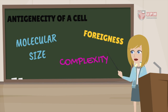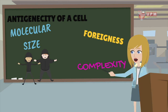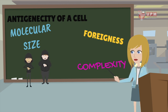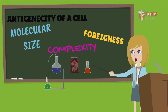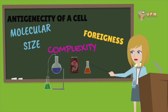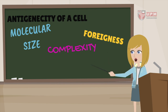The antigenicity of substances is based on three main factors. First, molecular size — in general, the larger the molecule, the more immunogenic the host cell is. Next is complexity — the more complex the substance is chemically, the more immunogenic it will be. Lastly, foreignness — an antigen must be a foreign substance to the host to elicit an immune response.